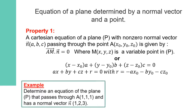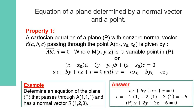Example: determine an equation of the plane P that passes through point A(1, 1, 1) and has a normal vector N with components (1, 2, 3). The general form of the Cartesian equation is AX + BY + CZ + R = 0. A, B, and C are the components of vector N. R is calculated as −AX₀ − BY₀ − CZ₀ = −6. So the equation of plane P is: X + 2Y + 3Z − 6 = 0.